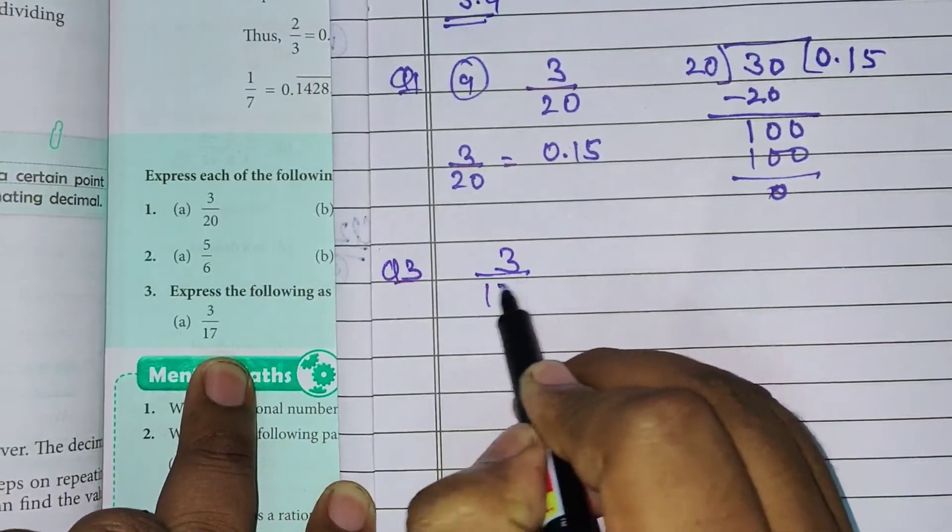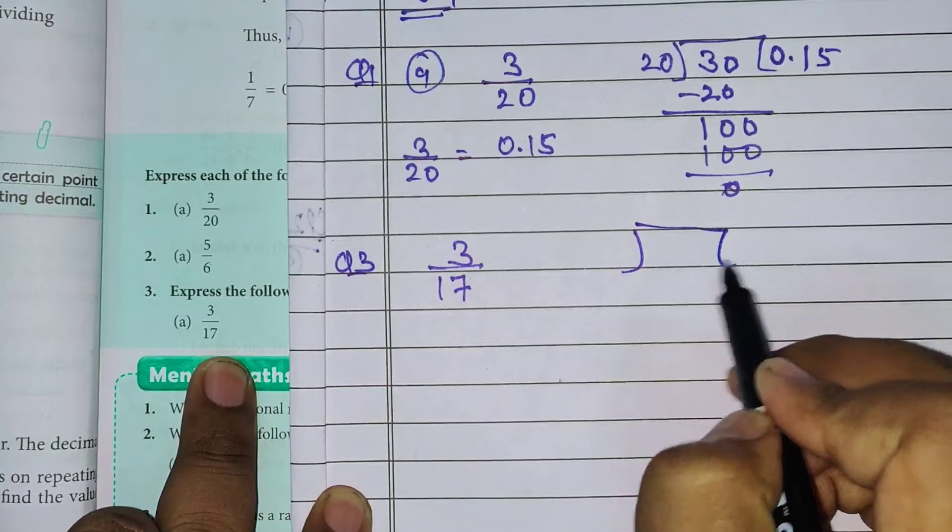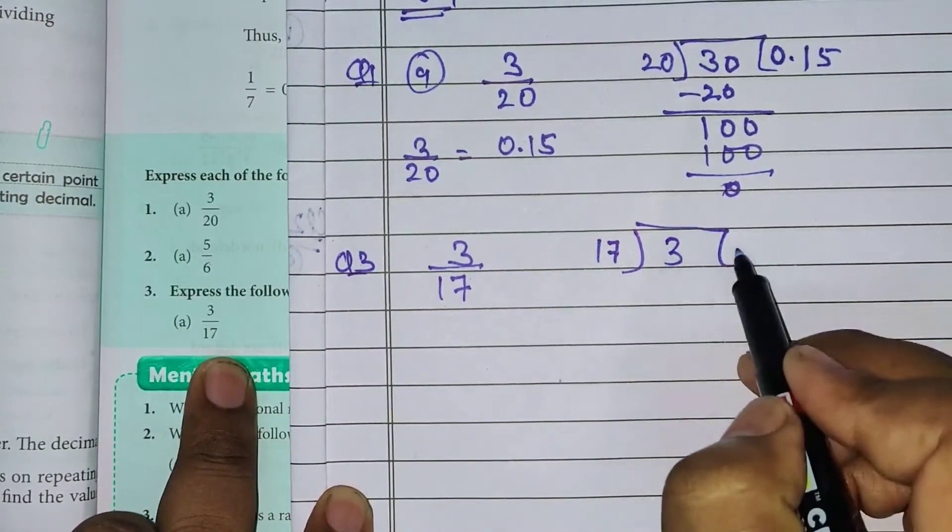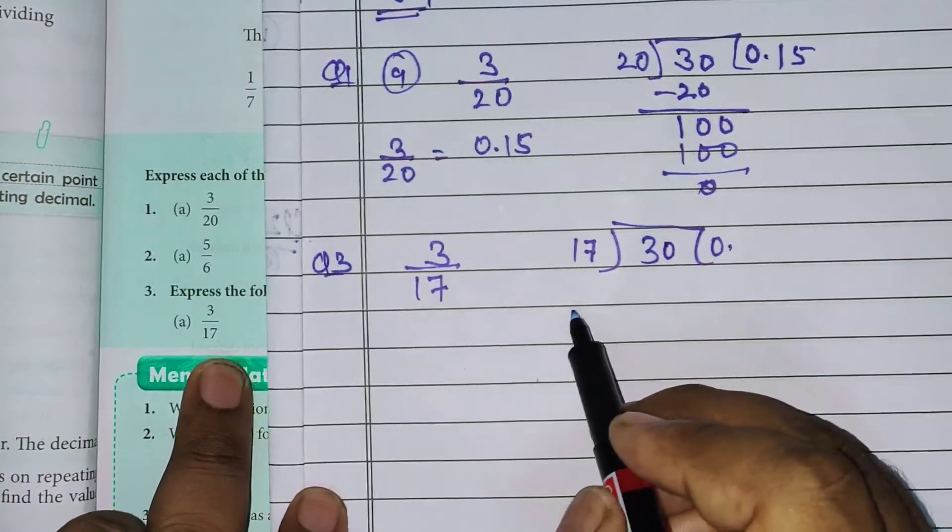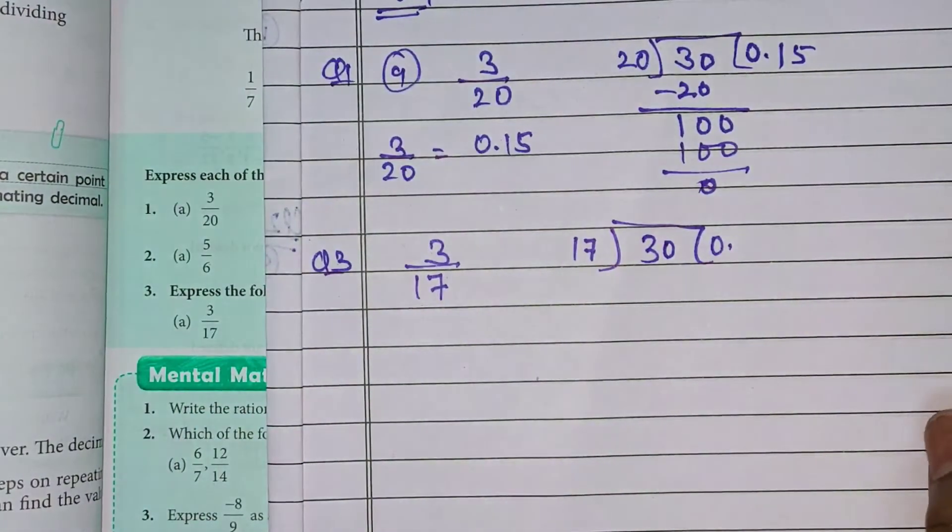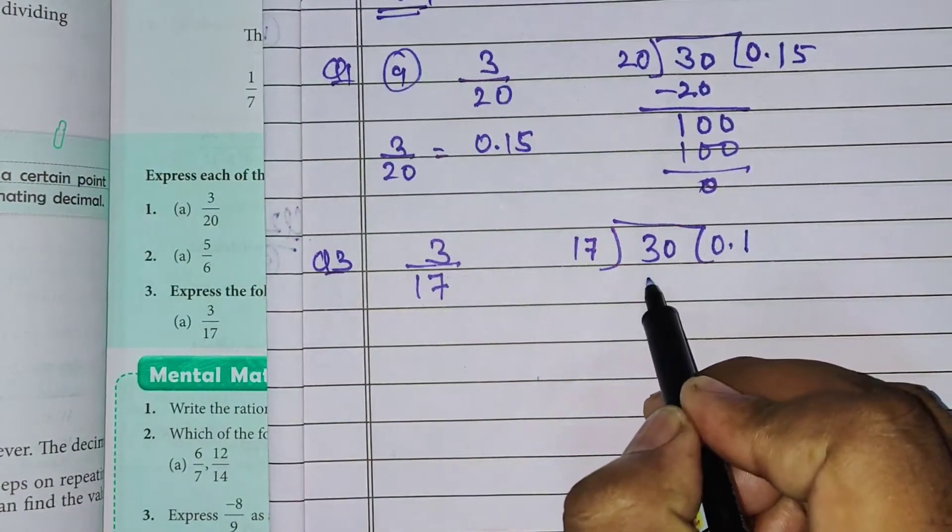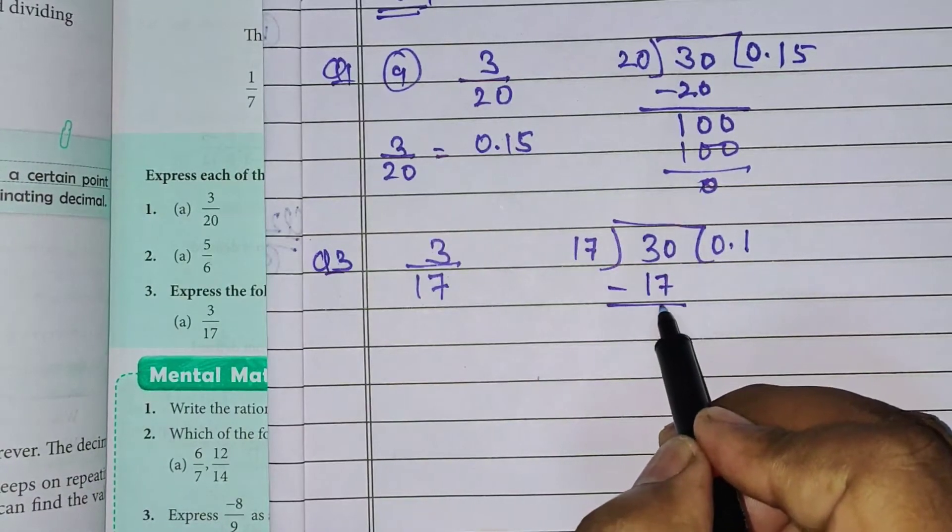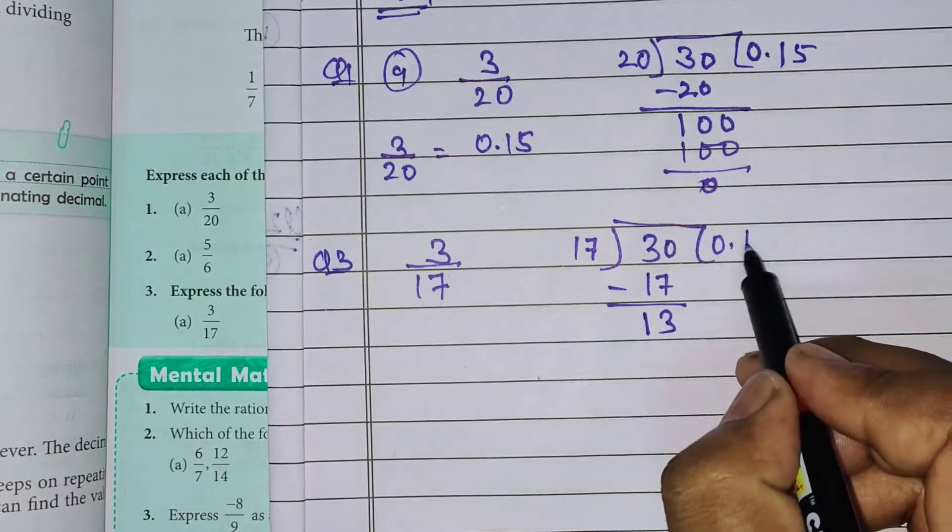3 upon 17. Jab hum kya karete hai bachos, 3 ko divide karta hai hai 17 se. Ye chhota hai, toh 0 decimal. Ke baad, hum 0 place kar saktay hai. 17 wanzha 30. 17 wanzha 17. Jabh isse hum subtract karayenghe, 10 me se 7 jayega 3, 2 me se 1 gaya 1, 13 hai.